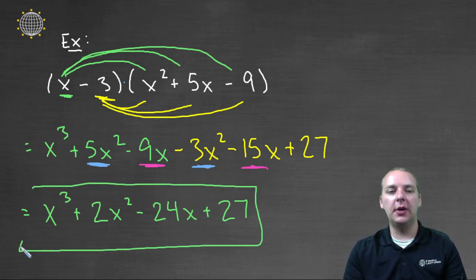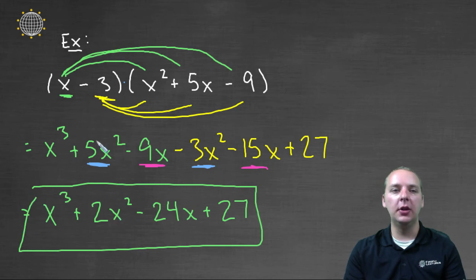So this would be your final answer right here. And this is how we distribute a general polynomial times another polynomial.